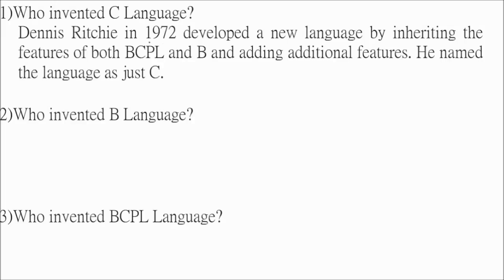Dennis Ritchie in 1972 developed a new language by inheriting the features of both BCPL and B. Earlier C was B and adding additional features. So he named this language as just C.